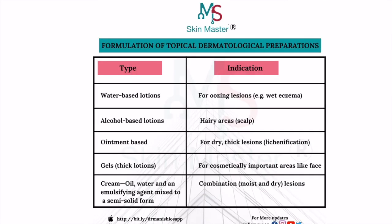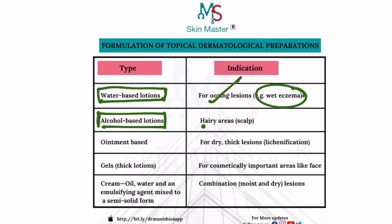Water-based lotion or water-based creams should be preferred for oozing lesions, that is wet eczema. Alcohol-based lotion should be preferred for hairy areas like the scalp — that is why minoxidil, a very common drug used in androgenetic alopecia, is available in alcohol-based form. Ointments are generally preferred for thick lesions like lichenified lesions, or dry and thick lesions — that is dry or chronic eczema.